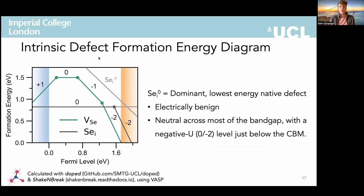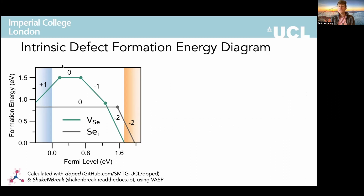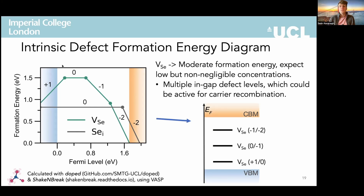This is our calculated formation energy diagram for the native defects in selenium, calculated using our defect packages — ShakeNBreak and as-doped — with the VASP DFT programme. We can see firstly that selenium interstitials are the lowest energy native defects and that they stay neutral throughout the bandgap. The fact that they have no single-electron change defect level in the bandgap means they cannot capture and recombine electrons and holes, and instead are expected to be electrically benign. The vacancies, on the other hand, are a different story. They have a higher formation energy — still only 1 to 1.5 electron volts, which is not very high — so we expect a low but non-negligible concentration in selenium depending on growth conditions. They show three different defect levels within the bandgap and so could be active as recombination centres.